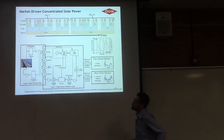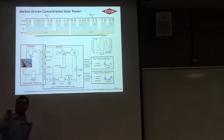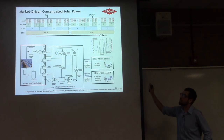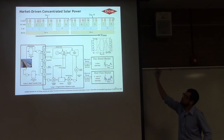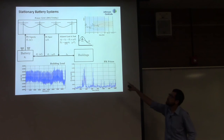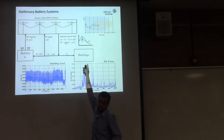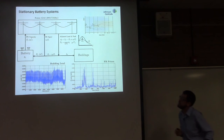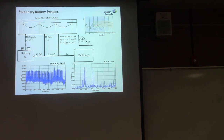We're also analyzing other types of technologies, like concentrated solar power, trying to decide where to sell electricity to different markets. We're also looking into batteries and how you can use batteries to provide flexibility to buildings and campuses — Johnson Controls is interested in this problem — while also providing frequency regulation capacity. There are a lot of opportunities for doing optimization of energy systems.